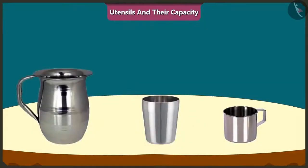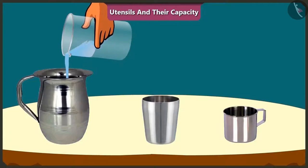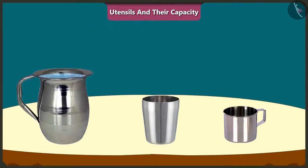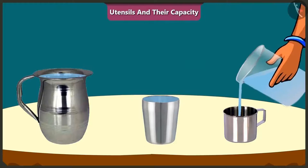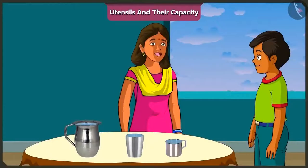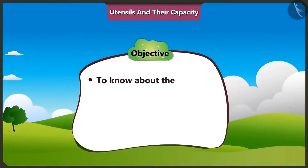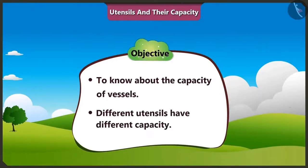How is that? Come on, let me explain it to you. See, I will pour water in this jug, in this glass and in this mug. The amount of water that can fill each of these vessels respectively is called its capacity. So, is this the way to know the capacity of any vessel? Yes, Mishtu. Come on, let us know more about the capacity of vessels and understand how different vessels have different capacities.